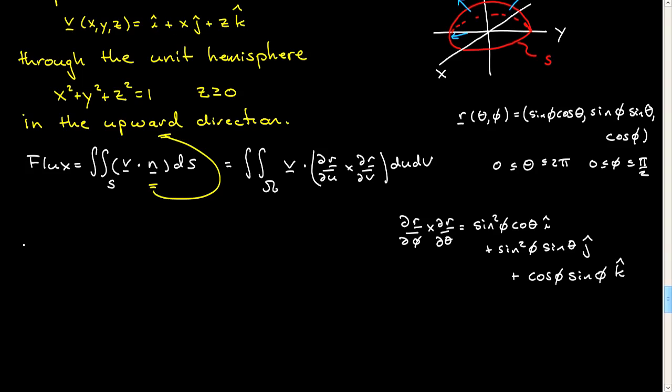So let's just do it. We have to write v in terms of our parameterization. So the first component is just i-hat as a constant. Now x, x is sine phi cosine theta. So what I've done is this x here, I've used the x in spherical coordinates to evaluate it. And then z is cosine phi. So that now is our vector field expressed in our parametrization, the same spherical coordinates.